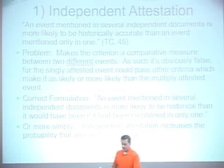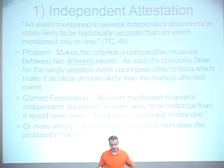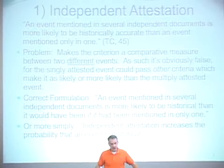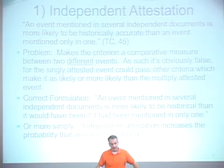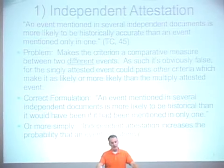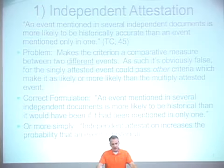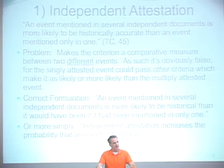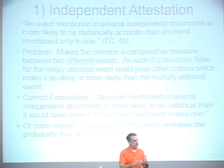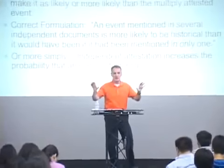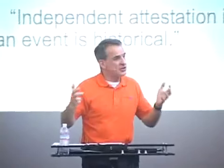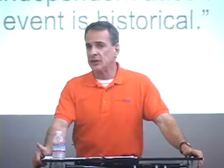Here's the correct formulation: An event mentioned in several independent documents is more likely to be historical than it would have been had it been mentioned in only one. Or, more simply, independent attestation increases the probability that an event is historical. So if an event in the life of Jesus is attested in independent sources, then it's more probable that it's historical, because it's unlikely to have been independently made up by two different sources. This is one of the most important criteria historians use in assessing historicity.